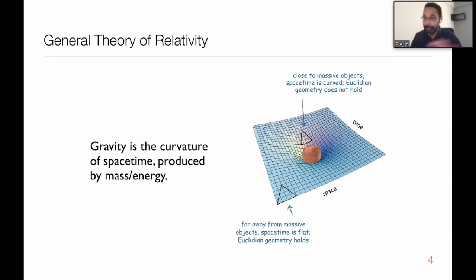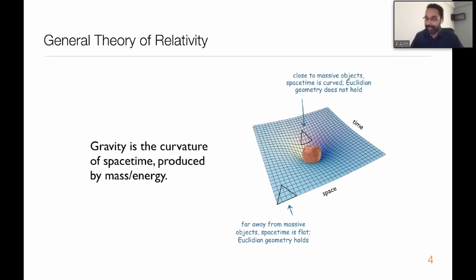Far away from any massive object, space-time is completely flat. This means that all the usual axioms of Euclidean geometry that we learned in school are valid. For example, if you draw a triangle and add the angles inside the triangle, it will add up to 180 degrees. Similarly, if you take the ratio between the circumference and the diameter of a circle, it's a constant called pi.